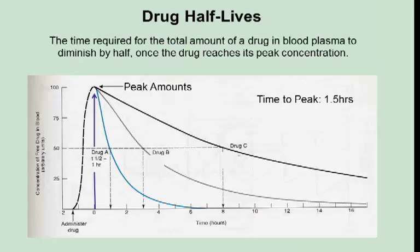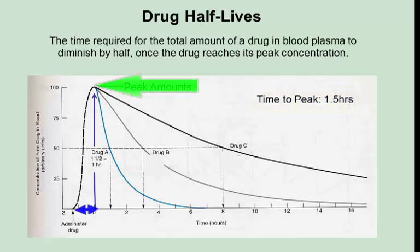A drug half-life is the time required for the total amount of drug in blood plasma to diminish by half once the drug reaches its peak concentration. An important piece of information when considering drug half-lives is the time to peak for a particular drug — that is, how long does it take a drug to reach peak concentration once in the bloodstream?